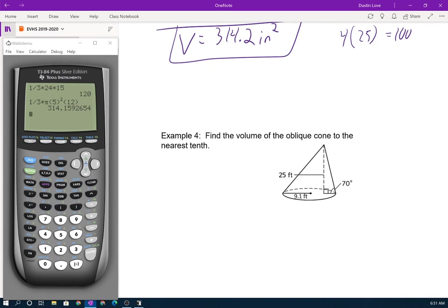Find the volume of the oblique cone to the nearest tenth. This works for oblique cones and oblique pyramids. What we want to do is make sure that we have the true height, which is perpendicular to the base. And since I see this right angle down here, yes, that is a true height. So here my height equals 25. My radius is 9.1. Volume equals one third pi r squared h, one third pi times 9.1 squared times 25.